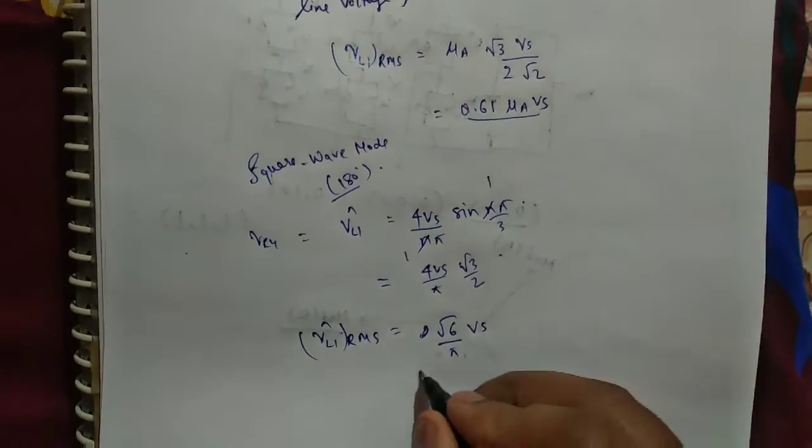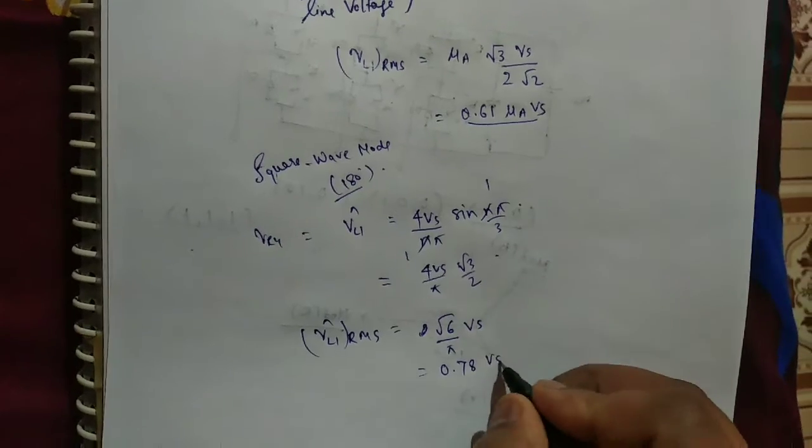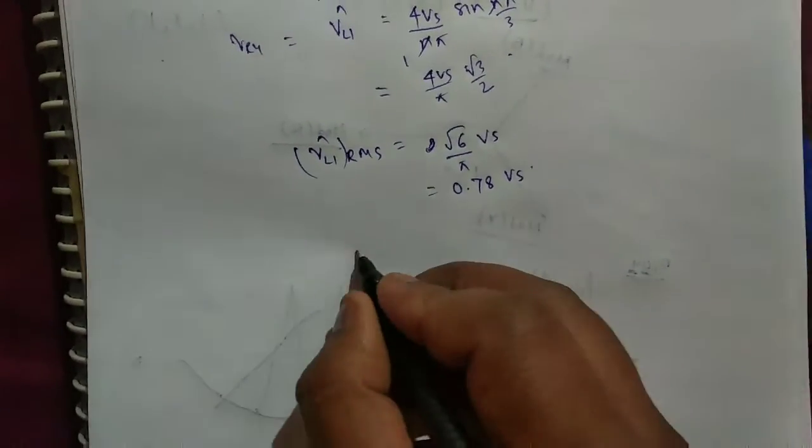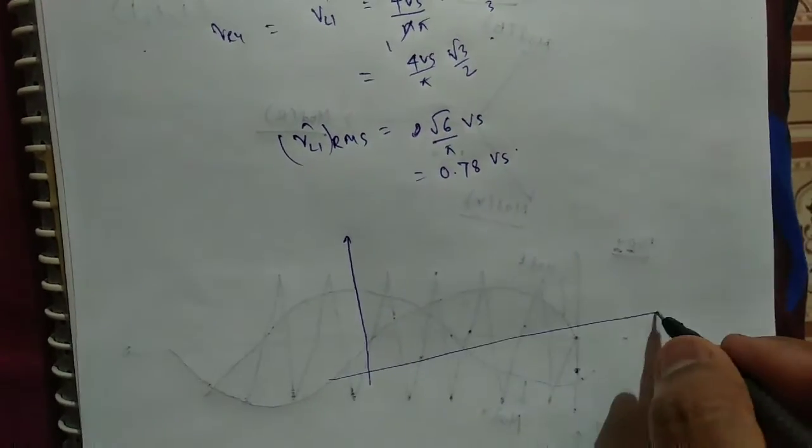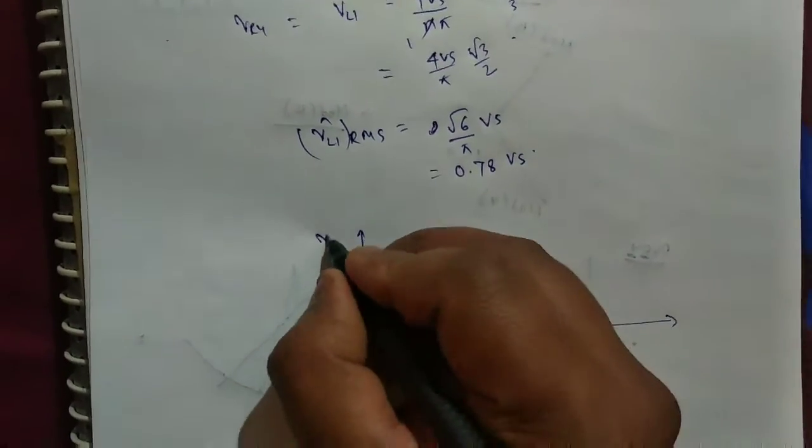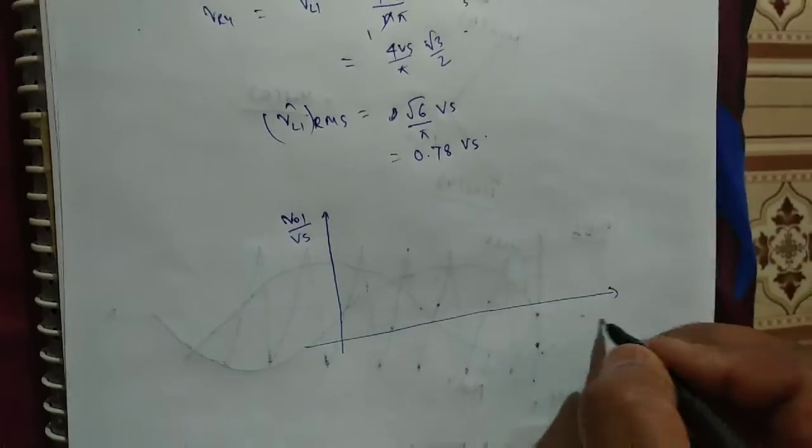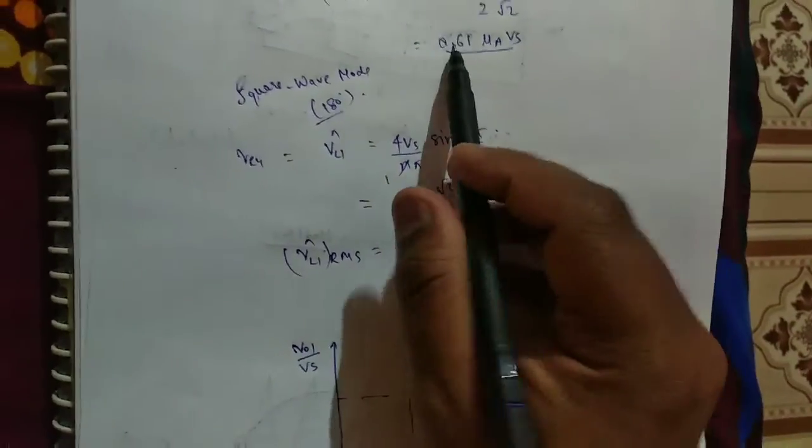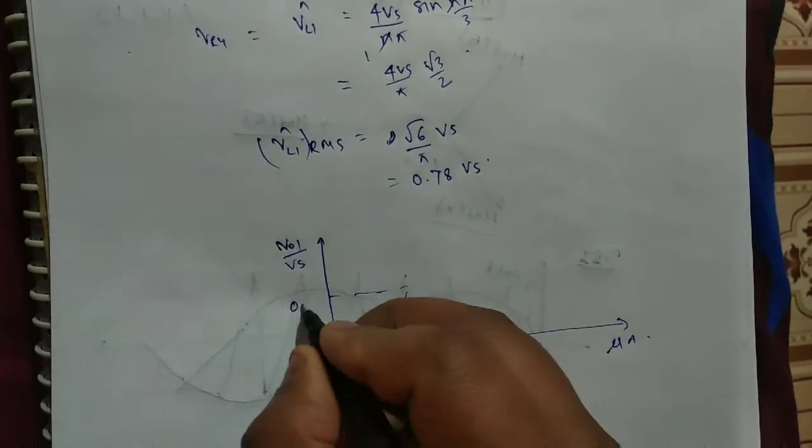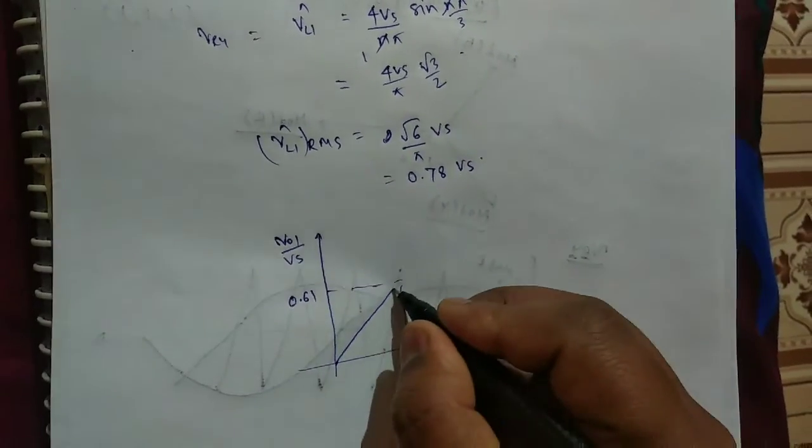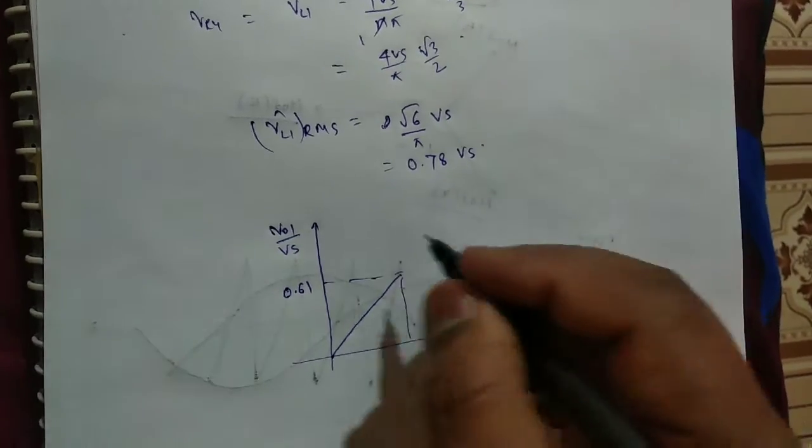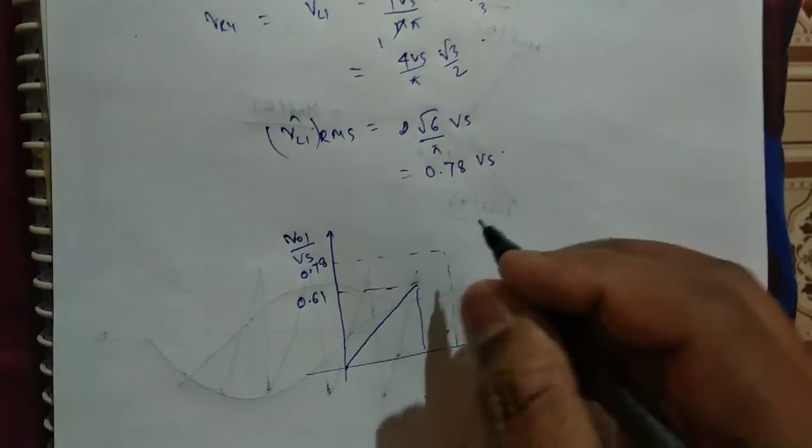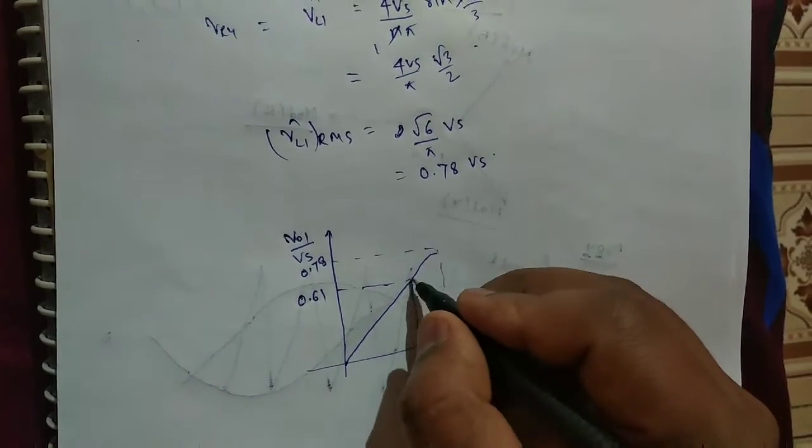That is equal to 0.78 V_S. Now see the graph between V_O1 by V_S and amplitude modulation, V_O1 by V_S and μ_A. So up to 0.61, linear modulation is there.